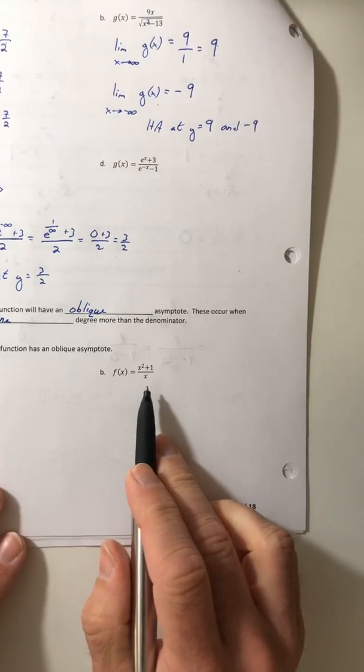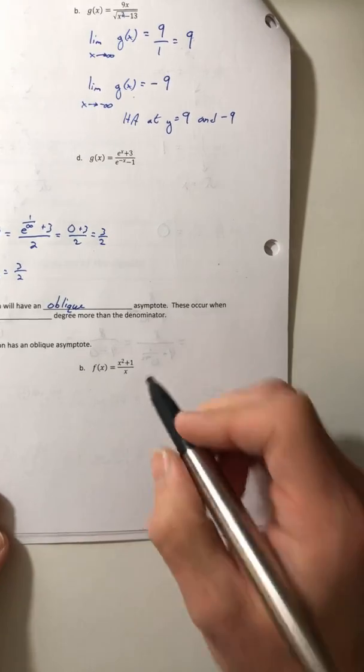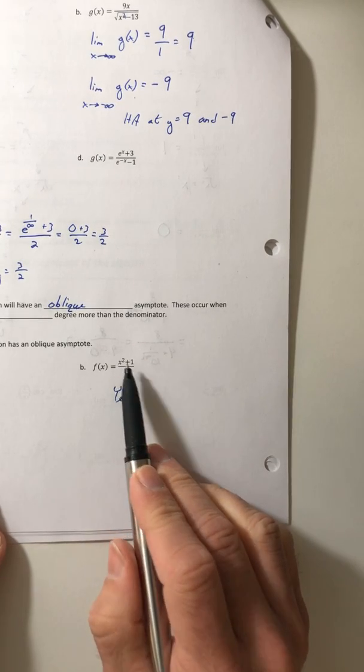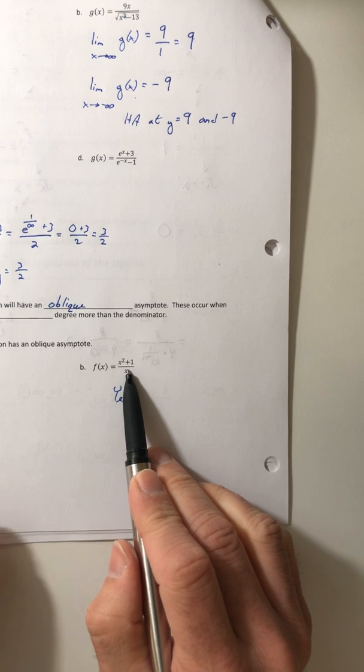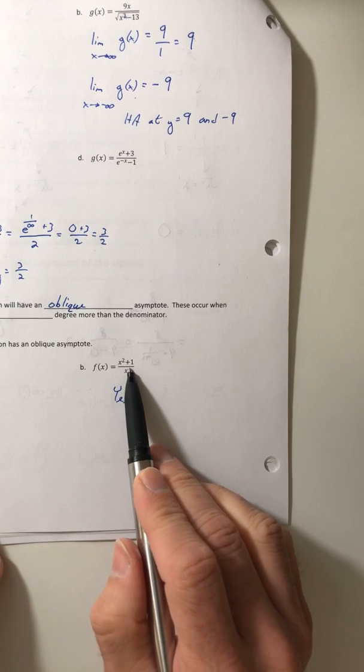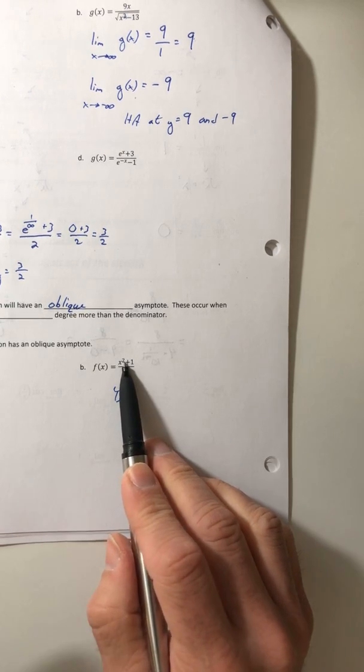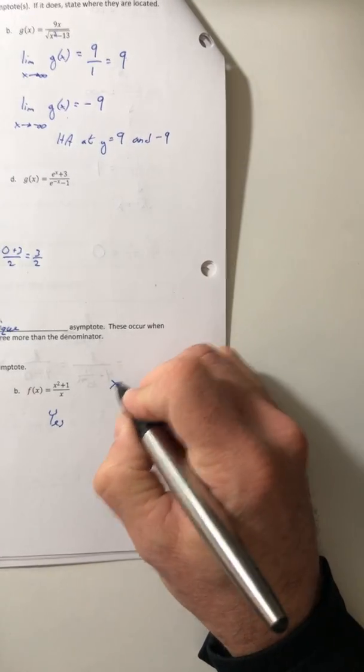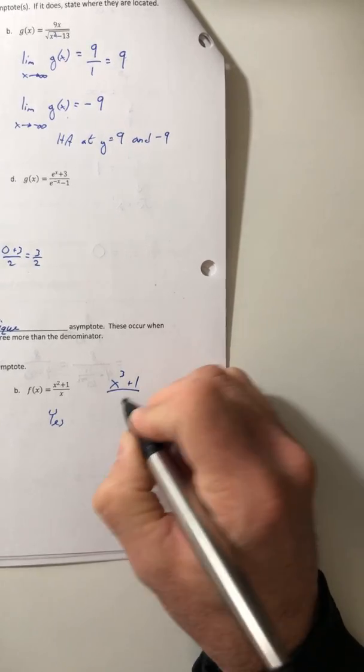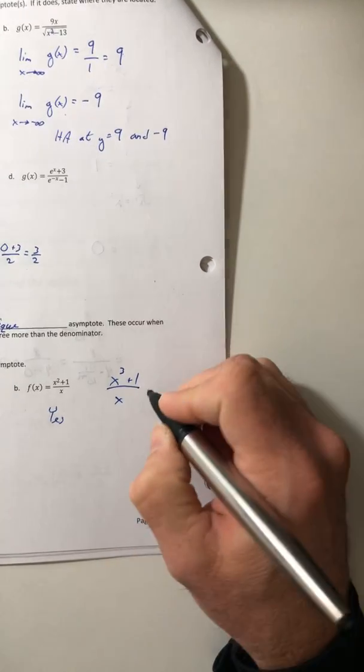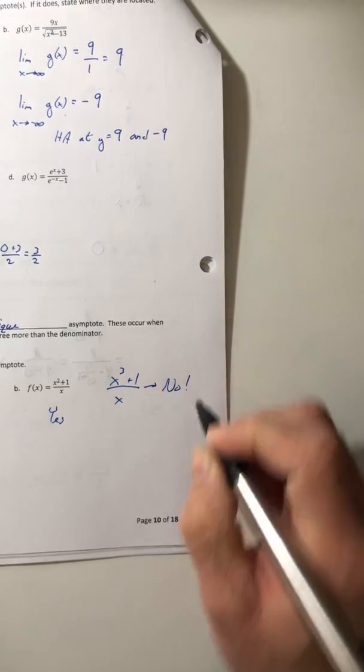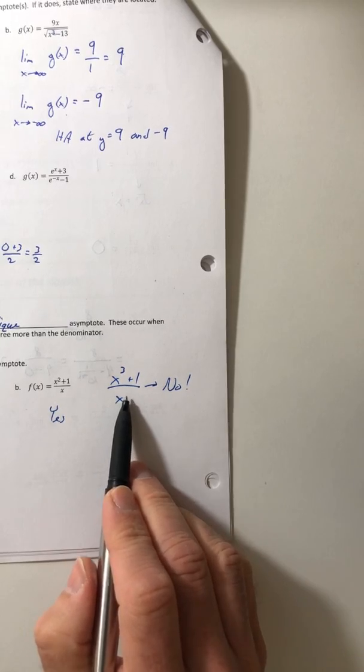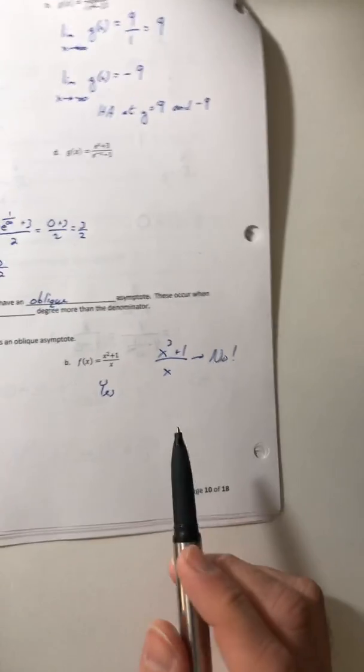And over here, on part B, the answer is going to be yes. Because the numerator has a bigger degree, and it's only one more degree than the denominator. The denominator is a degree of 1, the numerator is a degree of 2. It's only one more. And if I give you this one, x to the 3rd plus 1 over x, that would be a big no. The numerator is still bigger, but it's 2 more than the denominator. So that doesn't work.